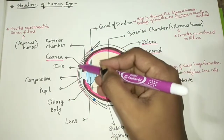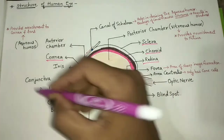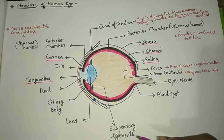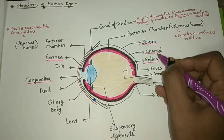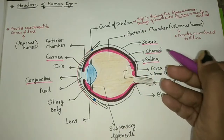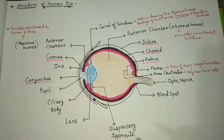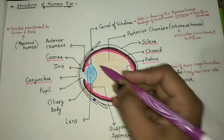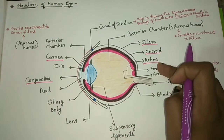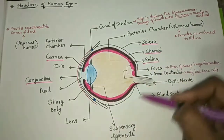The cornea is covered with a transparent membrane from the outside called the conjunctiva. The choroid layer contains melanin pigment, which is why it appears brown in color. The choroid layer is an incomplete layer — both choroid and retina are incomplete layers.